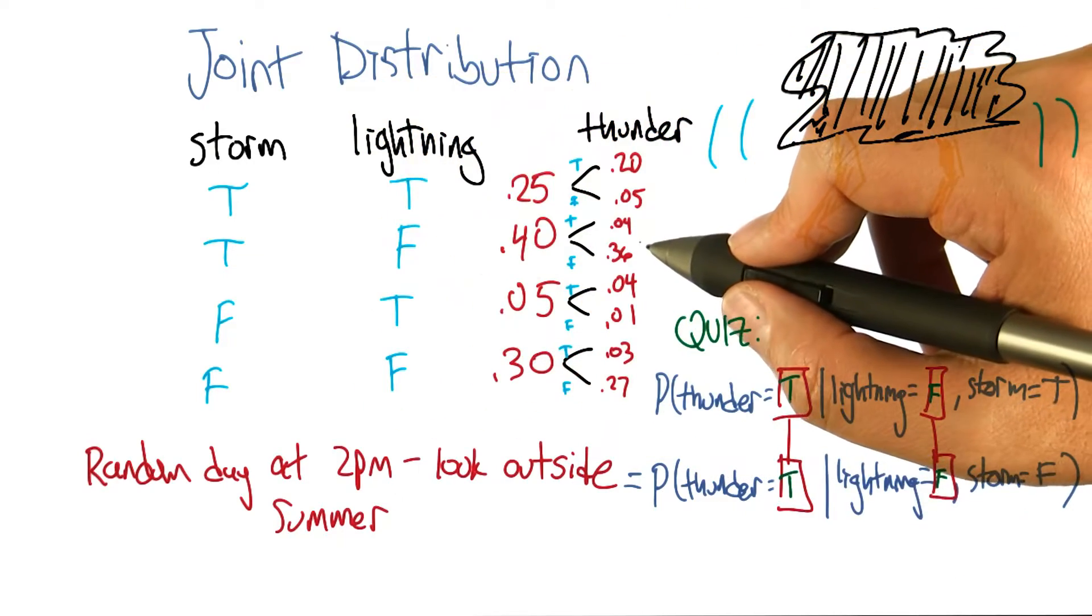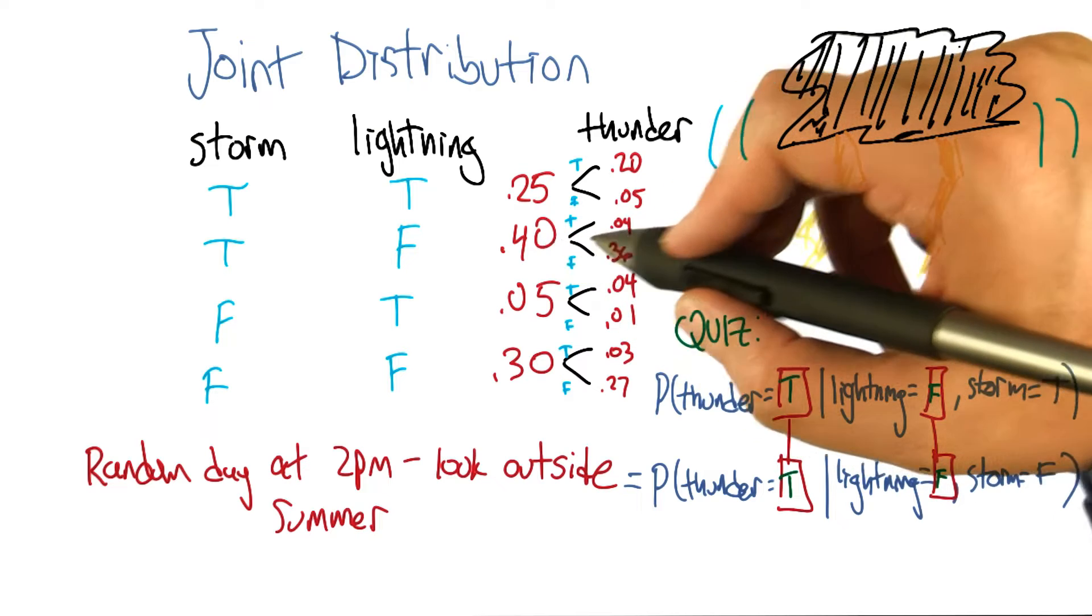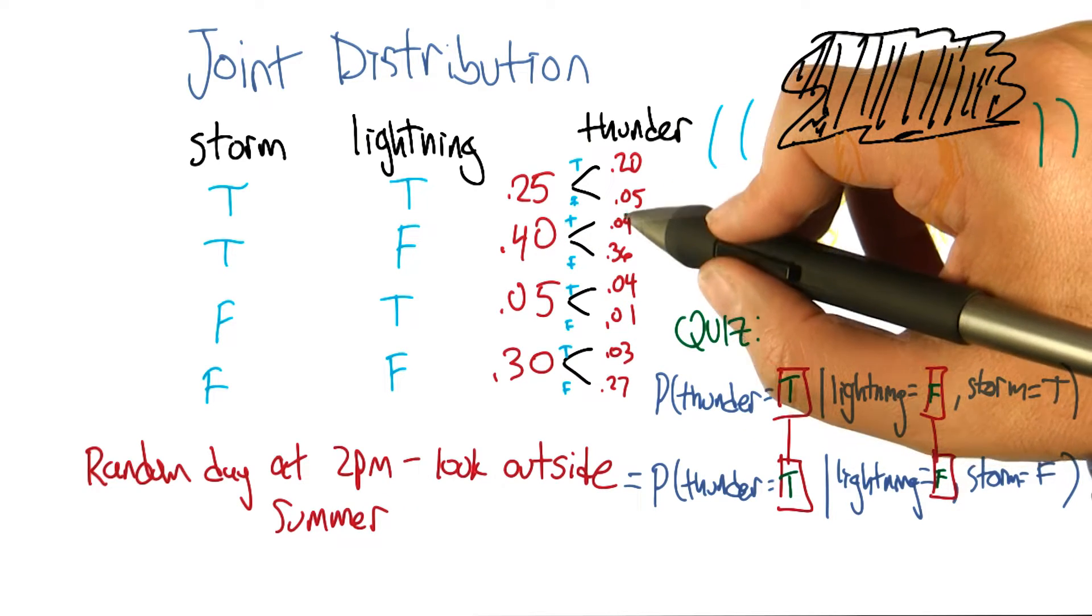Where lightning is false and storm is true, which is there. And the probability that thunder is true is 0.04 divided by 0.4. Oh, because we're asking about thunder, right.